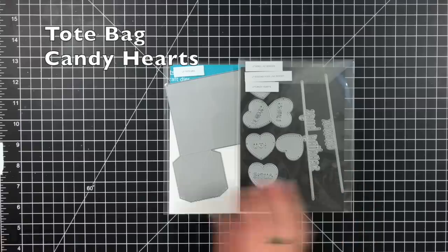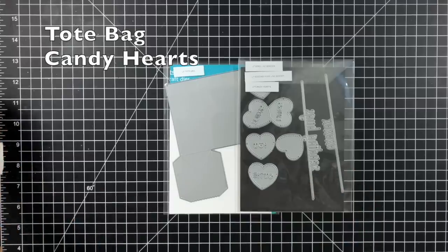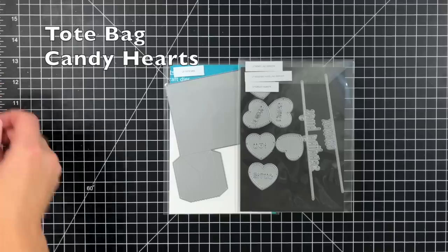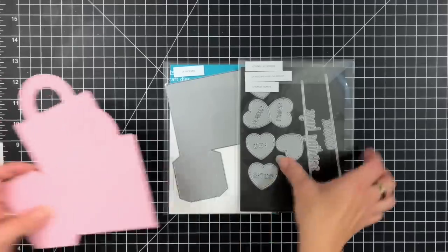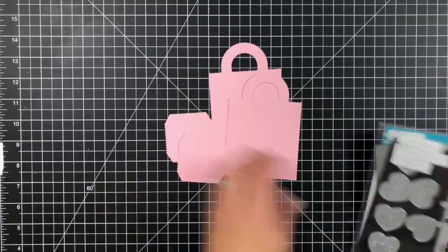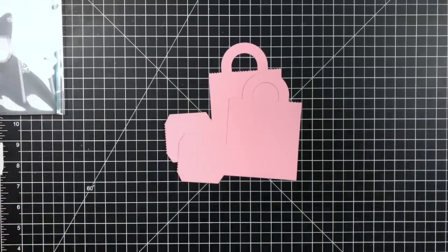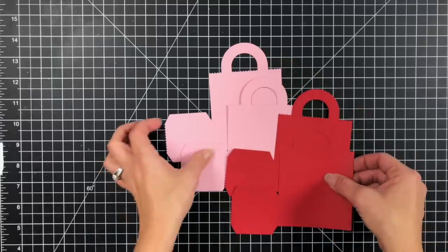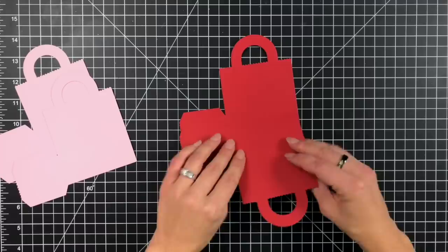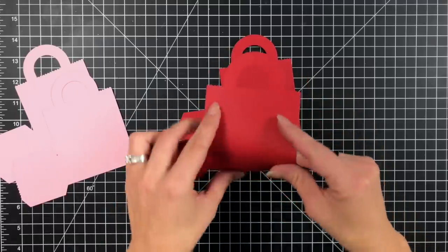For my first idea I'm going to be using the tote bag die and also the new candy hearts. What I did off screen is I went ahead and die cut out the tote bag from some ballet slippers cardstock. You need two pieces of those so you die cut that twice and I also die cut this out of chili pepper cardstock. So I'll have a red and a pink tote bag that I'll decorate.